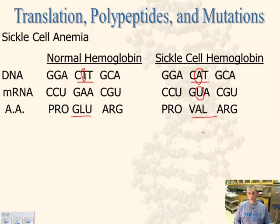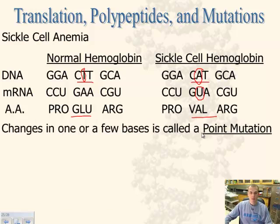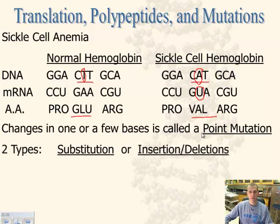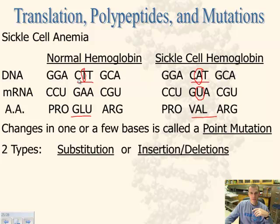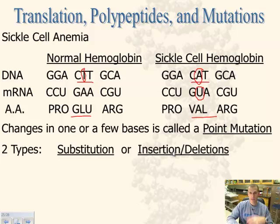It's only one letter difference, but it's a big difference when talking about your hemoglobin. This one change is what we refer to as a point mutation — if there's one change or a few changes in bases, we call it a point mutation. Two types are substitution, and insertion or deletion. The previous example was a substitution where T was replaced by A. Before that, we removed the letter A and caused a frame shift, which caused a larger change in the protein.